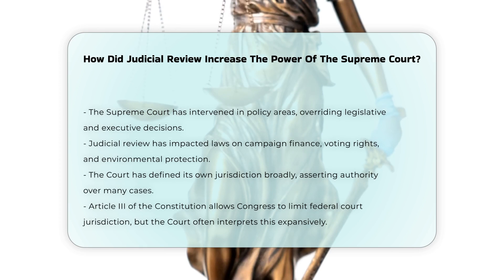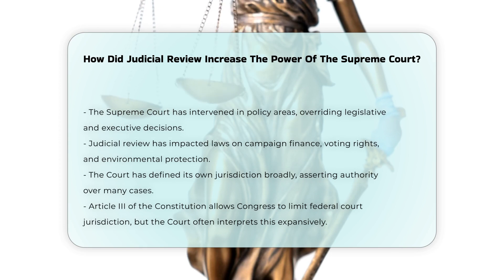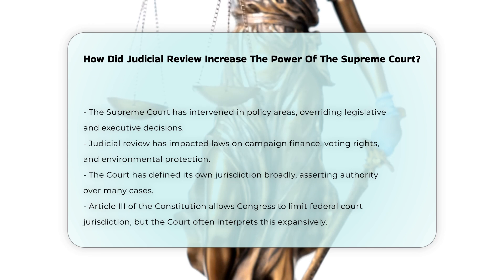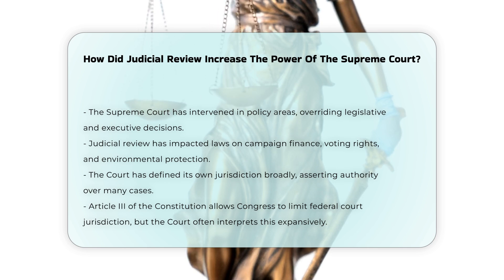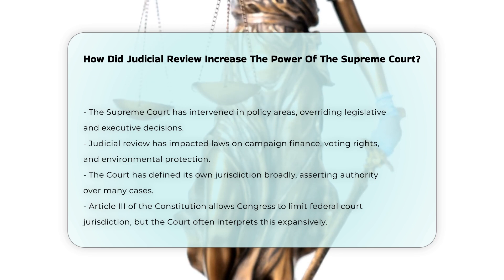These actions have significantly restricted the ability of Congress and administrative agencies to enforce laws and policies. The court's power has also been enhanced by its ability to define its own jurisdiction. Article 3 of the Constitution gives Congress the power to limit the jurisdiction of the federal courts, but the court has often interpreted this broadly to assert its authority over a wide range of cases.